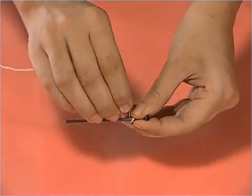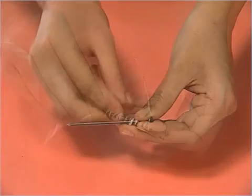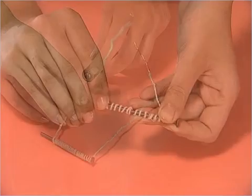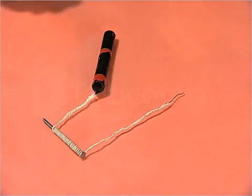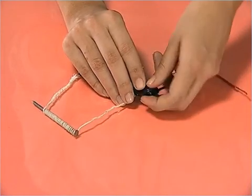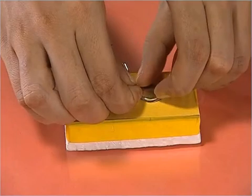First, wind the copper wire tightly around the nail. Next, connect the ends of the wire to the battery through the switch.